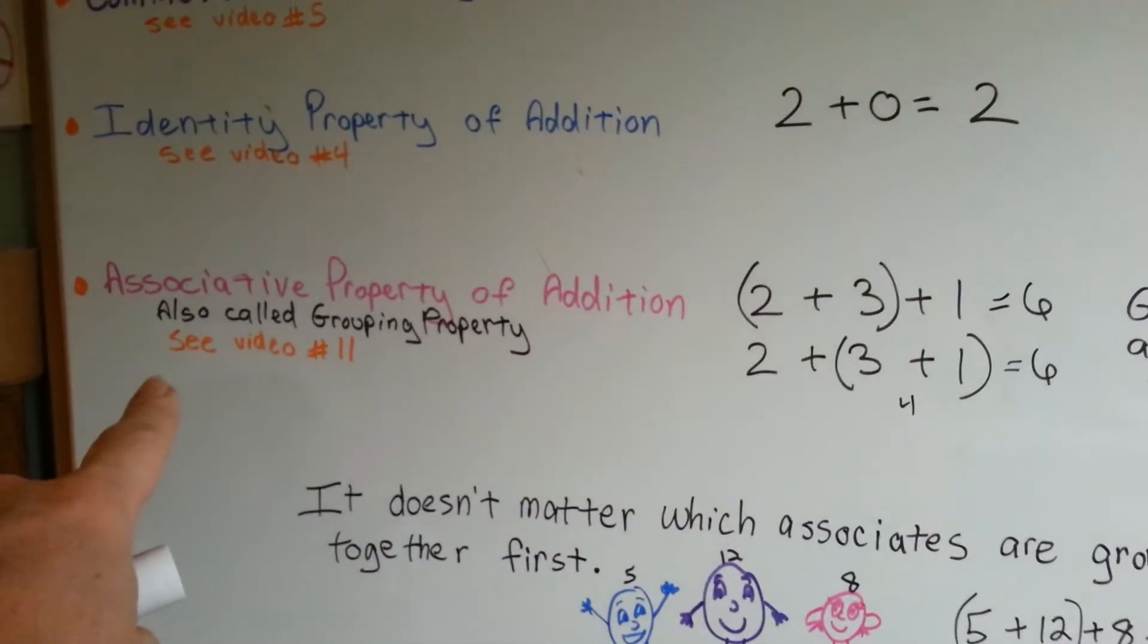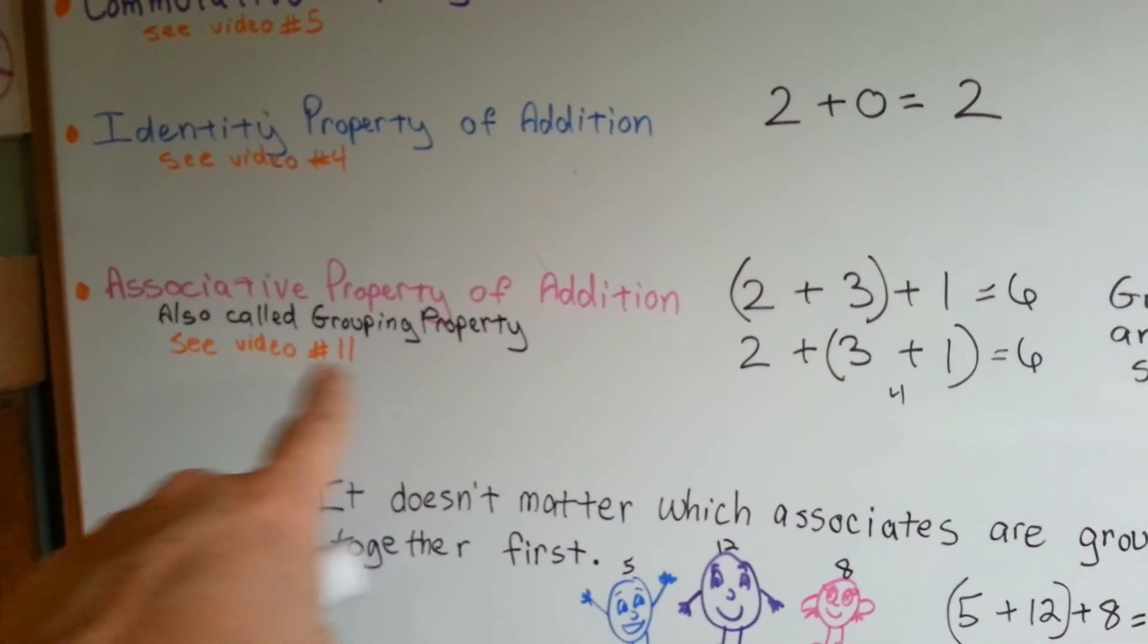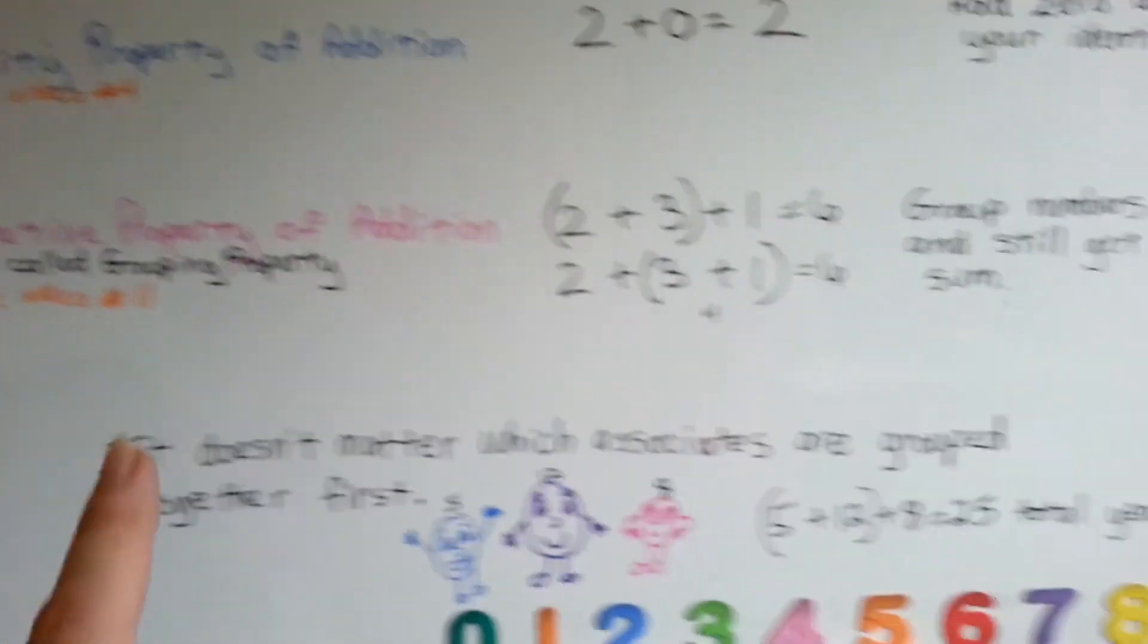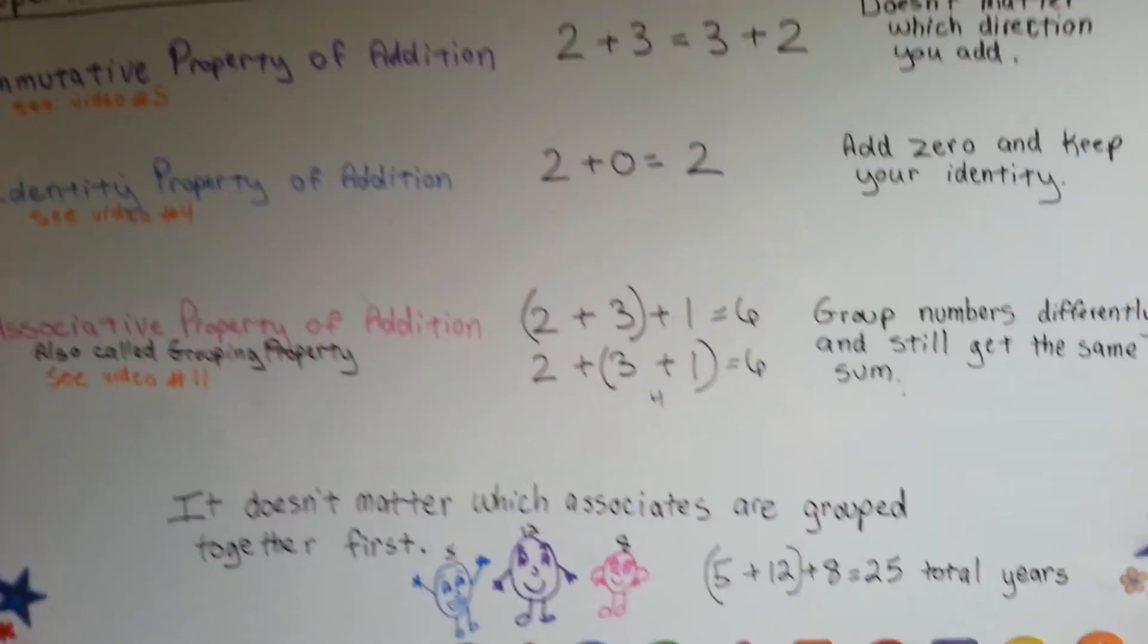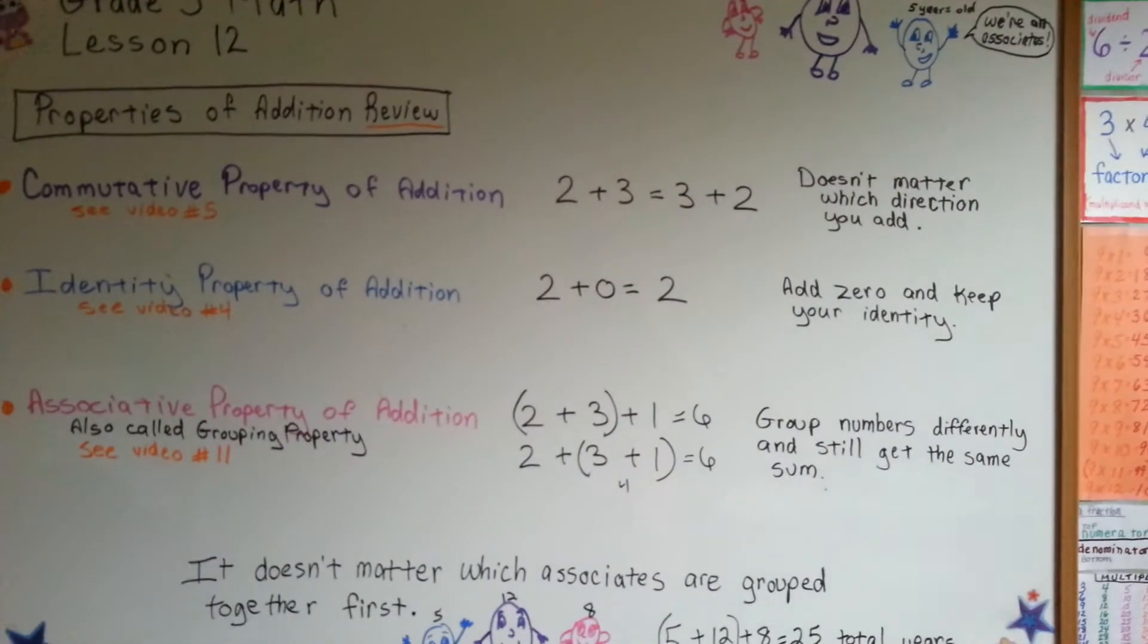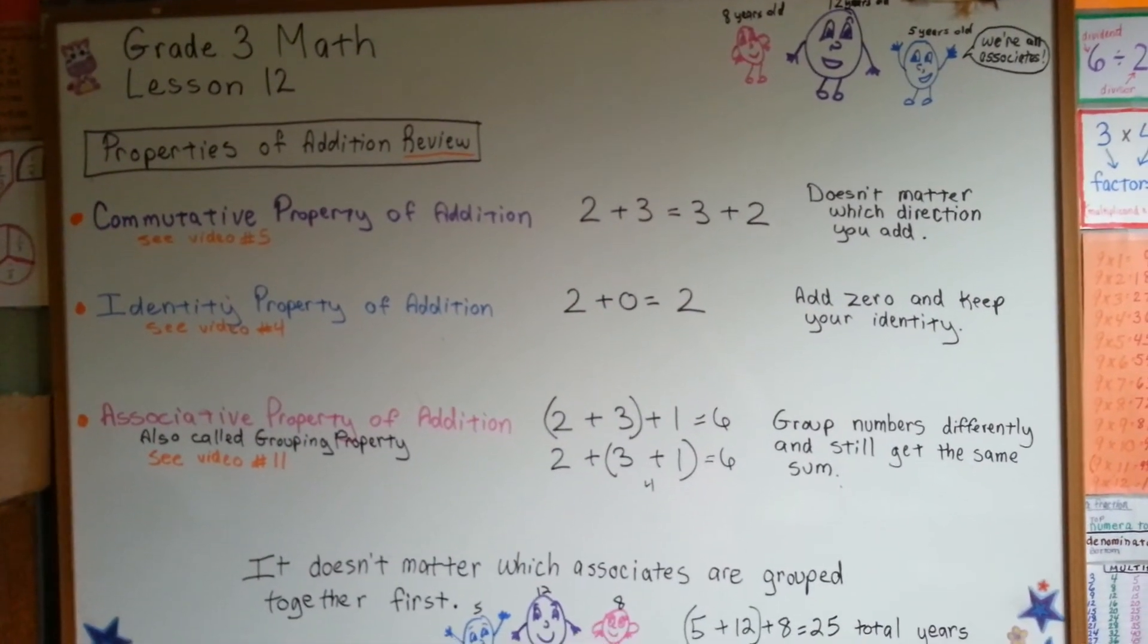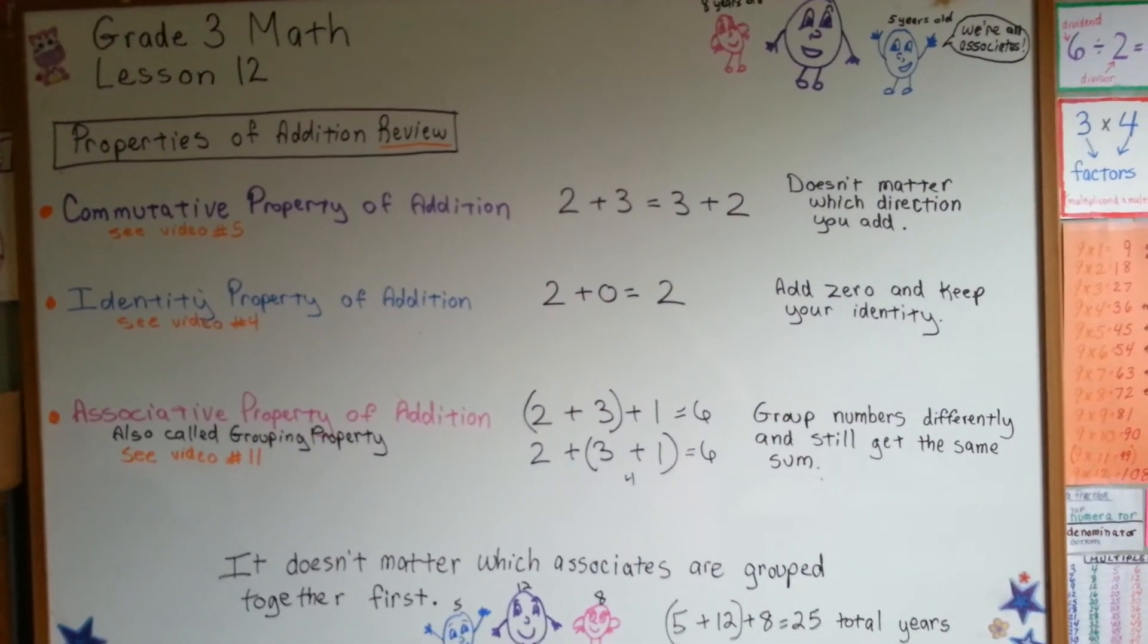That's the associative property, also called the grouping property. See our last video, number 11, to see the full video. So remember, these are our properties of addition. Don't confuse them with properties of multiplication. Those are a little different. See you next video.